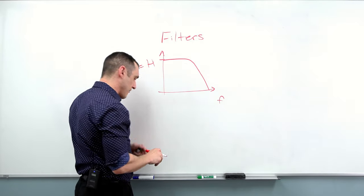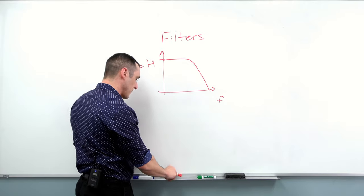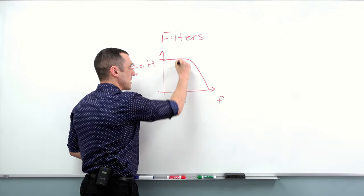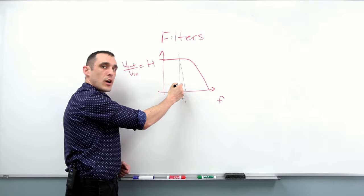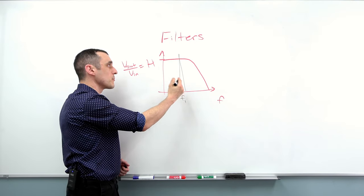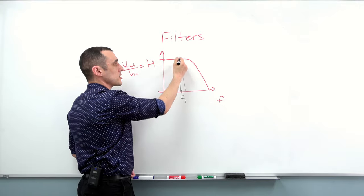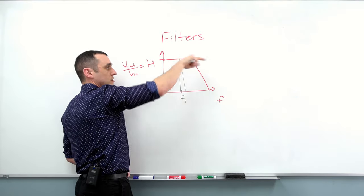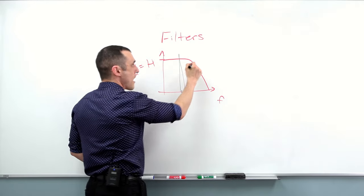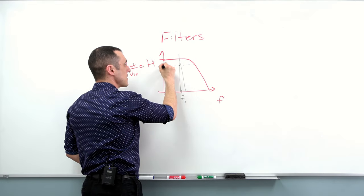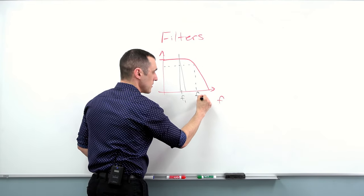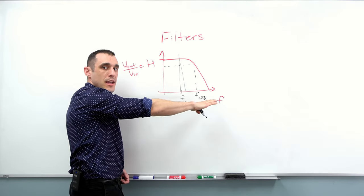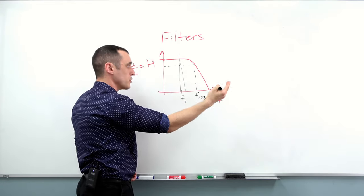So if you have a signal operating at frequency F1, the transfer function is telling you that it's going to allow all of the power in F1 to reach the destination. Everything above the F3dB roll-off is going to get heavily attenuated and will essentially get removed from the interconnect.